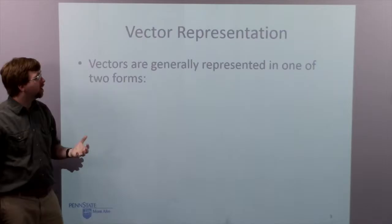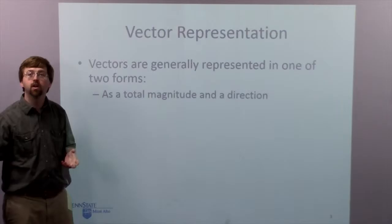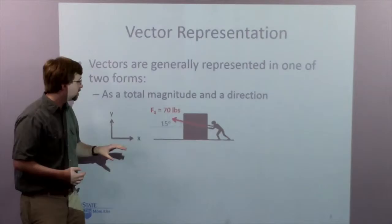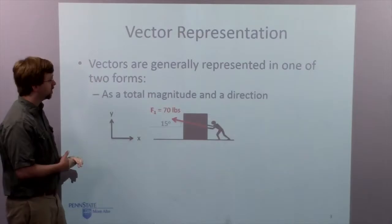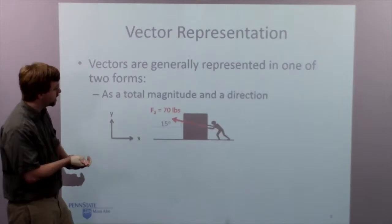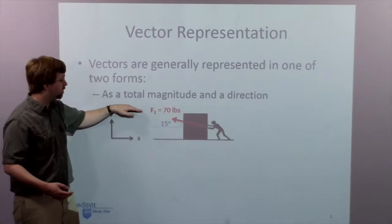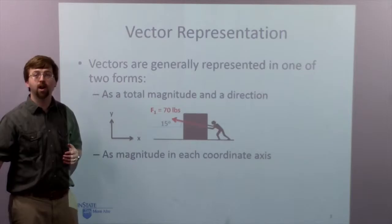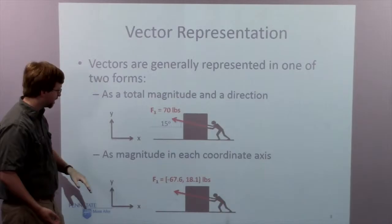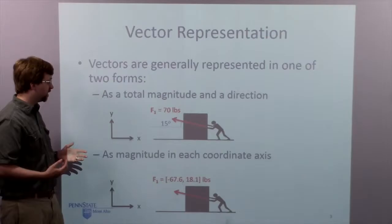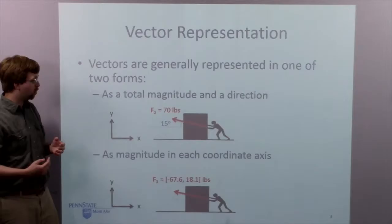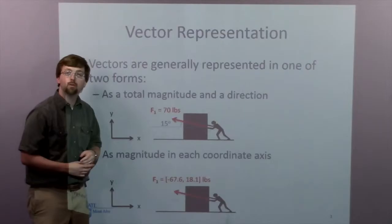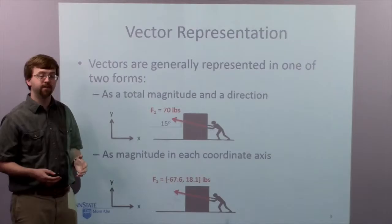So, vector representation — how do we quantify all of this? We're going to usually use one of two different forms to represent a vector. The first one is the magnitude and direction. For example, with an x-y coordinate system, a man pushing on a box is exerting 70 pounds of force at an angle 15 degrees up from horizontal. Next, we've got a magnitude in each of the coordinate axes. I could say the man is exerting negative 67.6 pounds in the x-direction and 18.1 pounds in the y-direction. These two are actually the same vector, just two different representations.